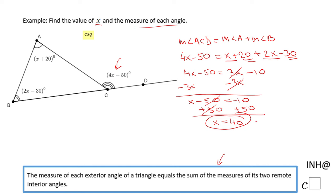Now we need to find the measure of each angle. Let's start with the measure of angle A, which is x plus 20. So that means 40 plus 20. The measure of angle A will be 60 degrees.